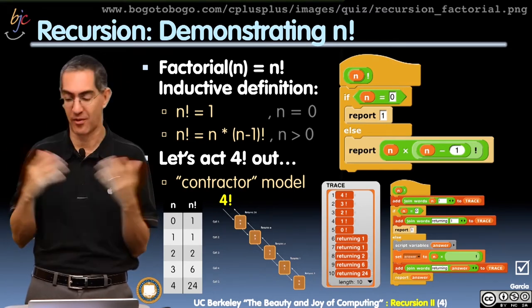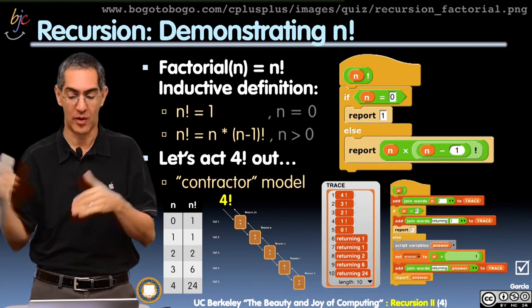So if you look at the code, if n equals 0, report 1. Otherwise, n times n minus 1 quantity factorial. Done.